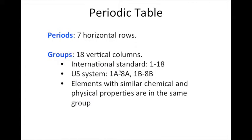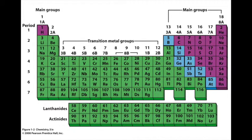So firstly the periodic table is organized in horizontal rows and vertical columns. The horizontal rows are called periods and the vertical columns are called groups. There are seven periods, so if we look at our periodic table we can see period number one contains hydrogen and helium.